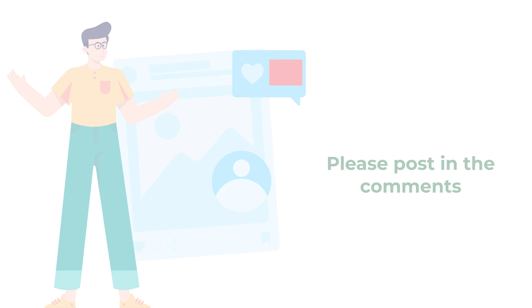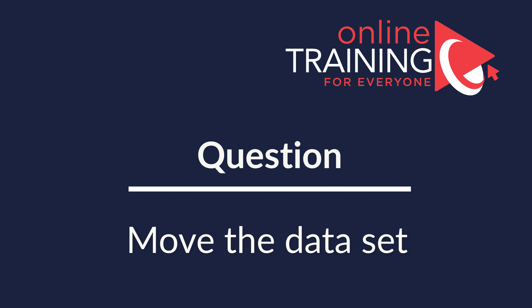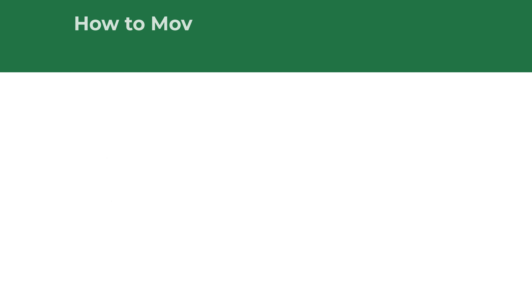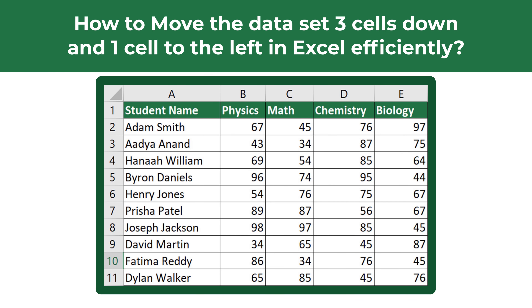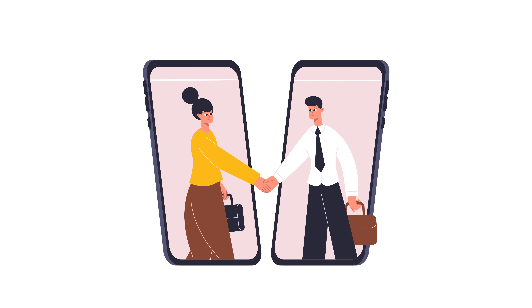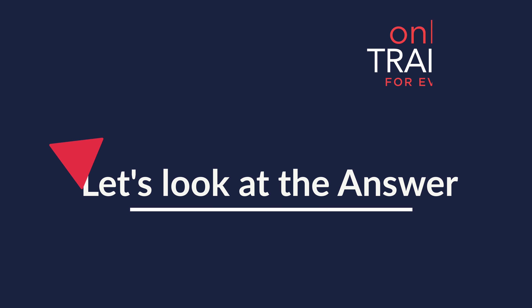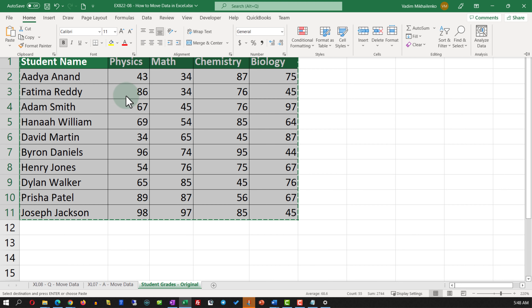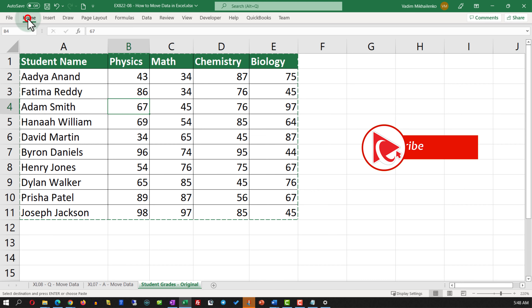A lot of times you might be presented with a question that tests your knowledge of the Microsoft Excel user interface. For example: how to move a data set three cells down and one cell to the left in Microsoft Excel efficiently. You are presented with a data set of student names containing names and grades in physics, math, chemistry, and biology. One of the easiest ways is to select the data set, then in the Home tab use the Cut function, identify the new location, and paste the data there.